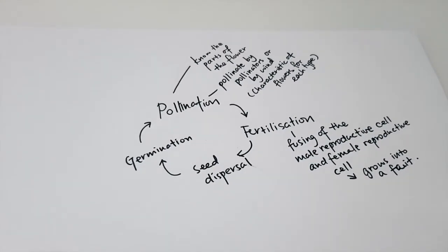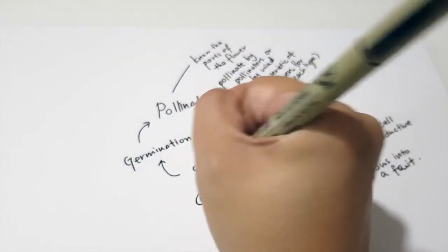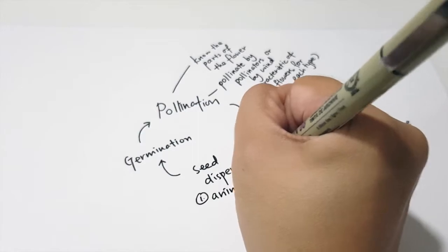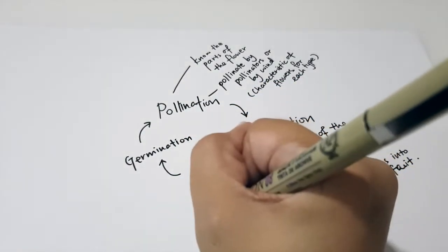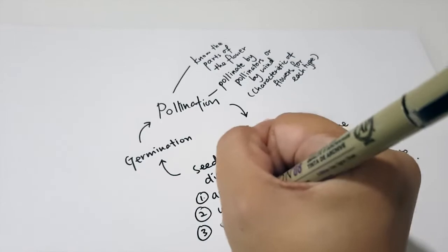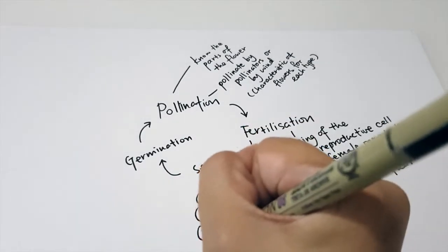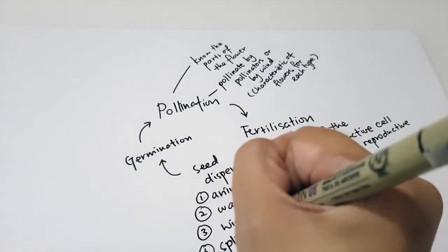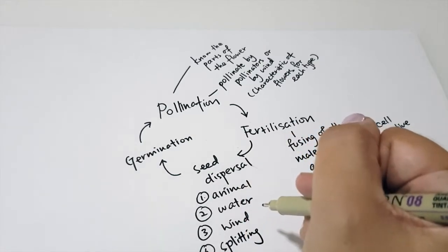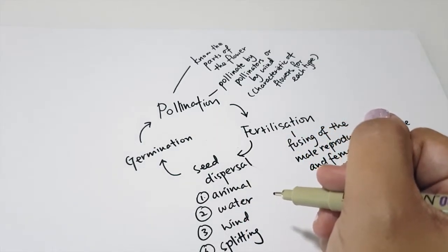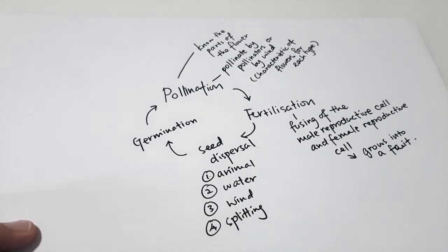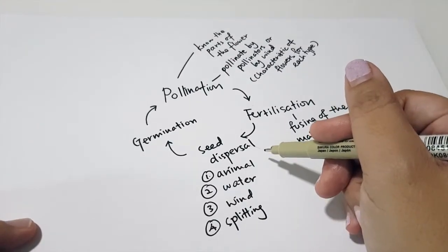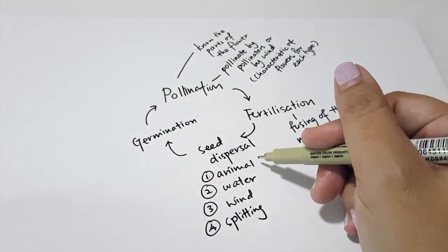When the fruit is ripe, the seeds will be dispersed, because that is how plants reproduce — they need the seeds to go elsewhere so new plants can grow. There are four ways of seed dispersal: by animal, by water, by wind, and by splitting.